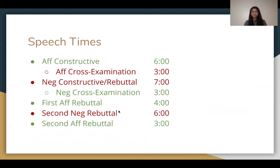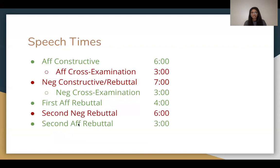Each side gets 16 minutes in total. The affirmative constructive starts first with six minutes, then neg cross-examination for three minutes, then the neg constructive and rebuttal for seven minutes, neg cross-examination for three, first affirmative rebuttal for four, second neg rebuttal for six, and lastly the second affirmative rebuttal for three minutes.